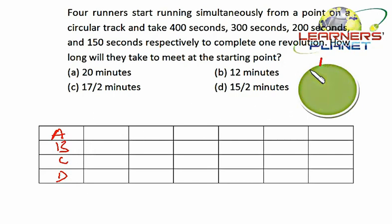Now A is taking 400 seconds to complete one revolution. That means after every 400 seconds he'll be reaching to this particular point, suppose X. So he'll be coming at this position after 400 seconds, then 800, 1200, 1600, 2000, and 2400, and so on.